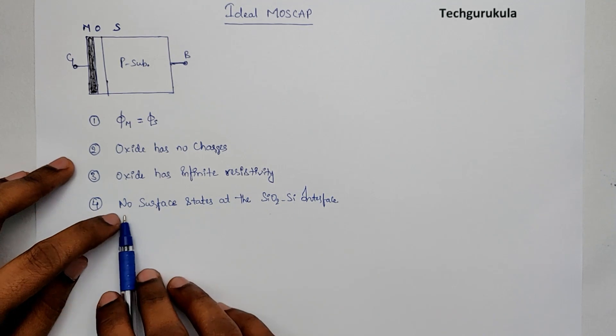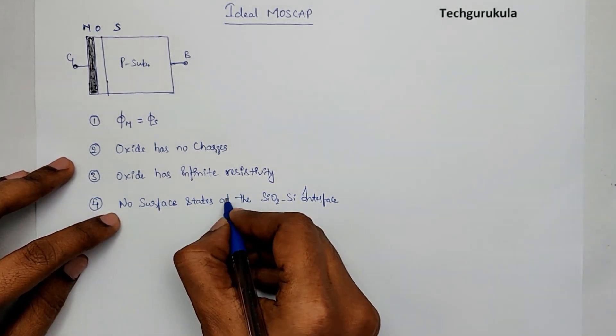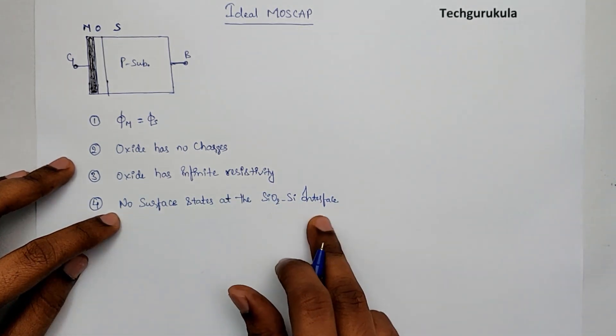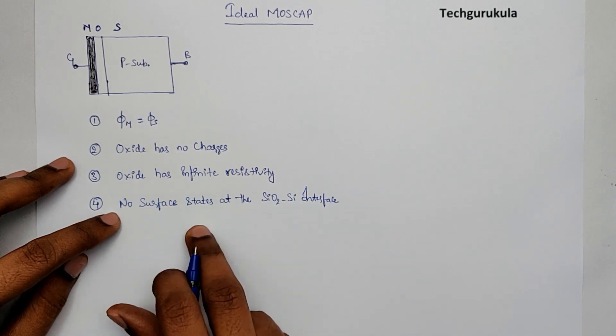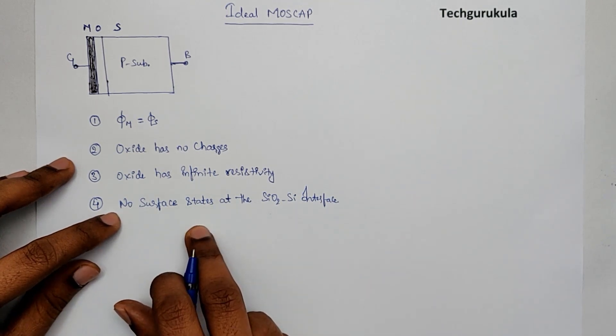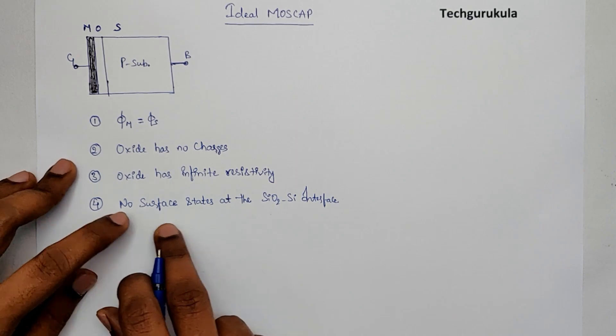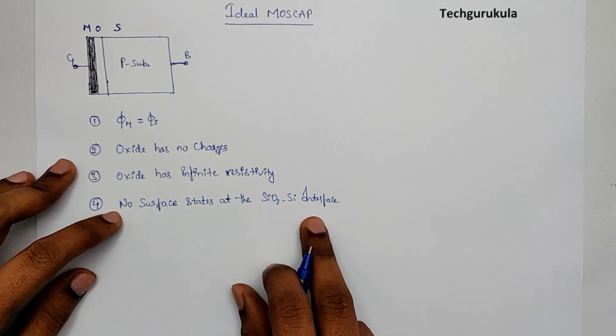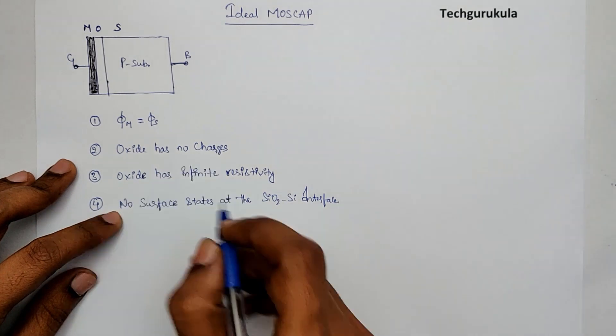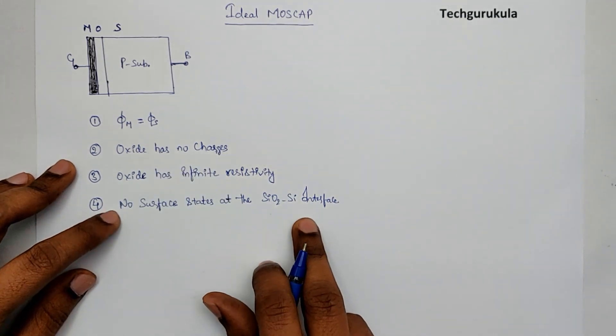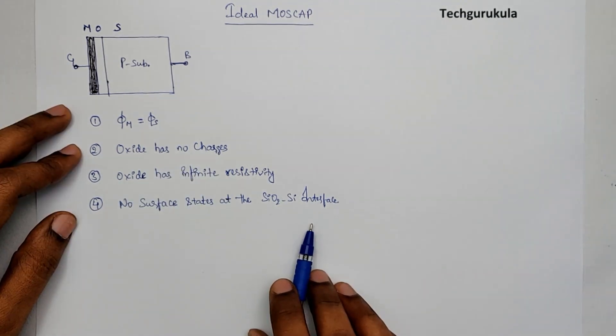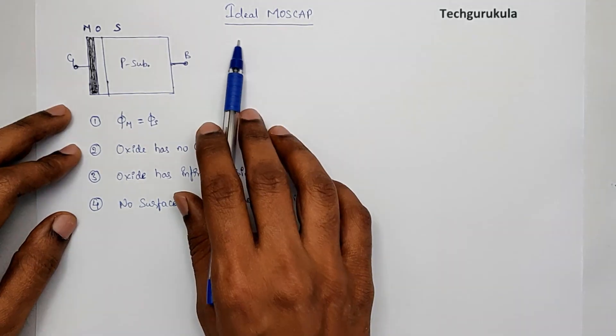This is one of the very sensitive and a bit complex topic. Surface states discussion, we'll not be getting to this point, in fact, even in non-idealities at the moment, which is beyond the scope of this course. Now, taking all these assumptions, we're going to say that is ideal MOSCAP.